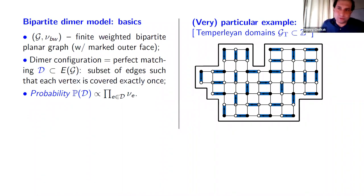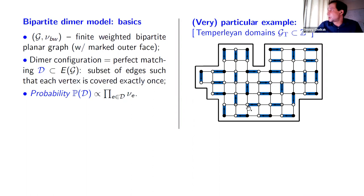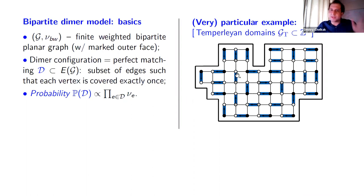Hopefully we now understand what these Lorentzian minimal surfaces are in continuum, without any link to the dimer model. Now I move to the real introduction: what is the bipartite dimer model? You just take whatever weighted bipartite graph and look at perfect matchings, which means a collection of edges covering every vertex once. A dimer configuration is another name for such a perfect matching, and the probability is the product of the weights.